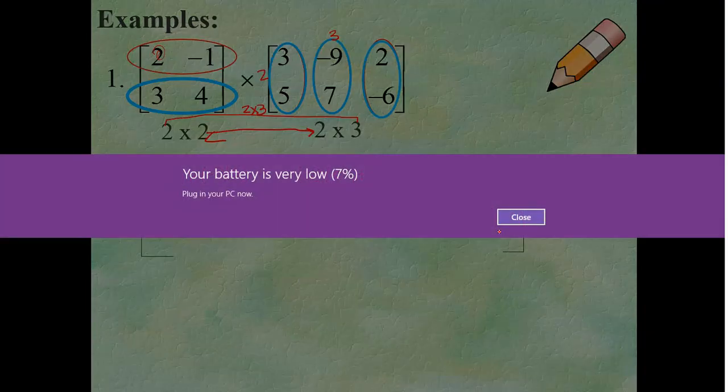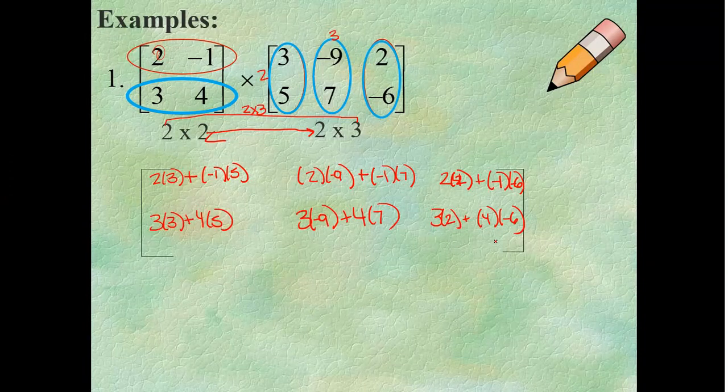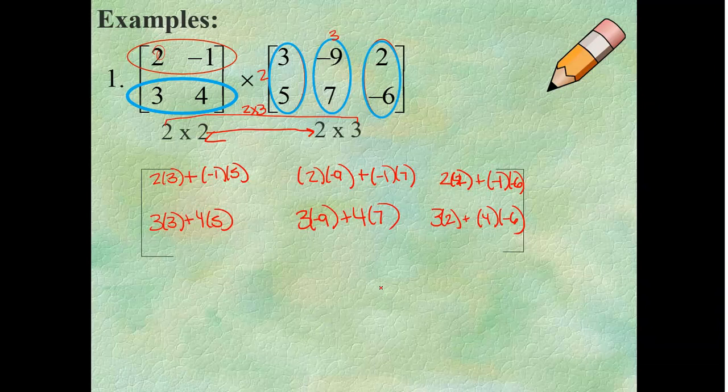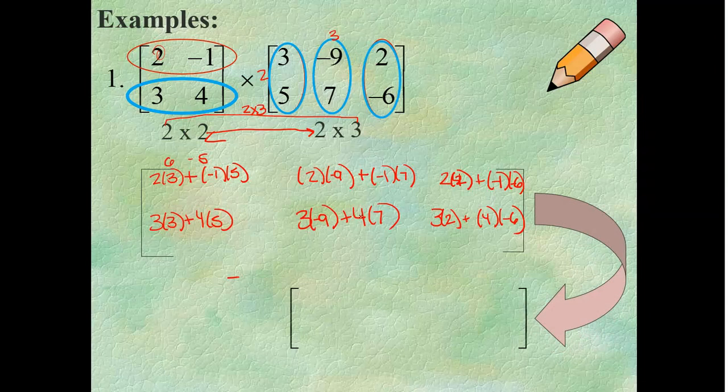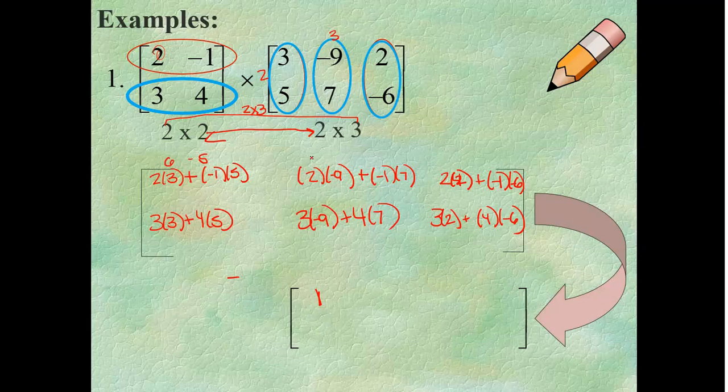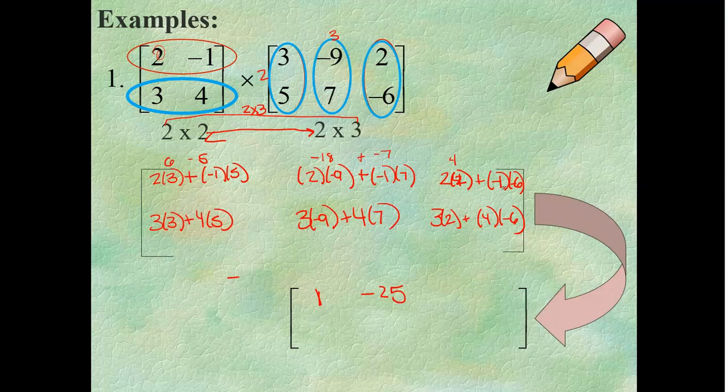Now, let's actually do our math. So, 2 times 3 is 6 minus 5. This would be 6 minus 5. So, I know that is going to result in a matrix. That element is going to be 1. So, 2 times negative 9 is negative 18 plus a negative 7. So, I'm going to get a negative 25 there. 2 times 2, we said that was 4, plus 6. So, I should get a 10 there.